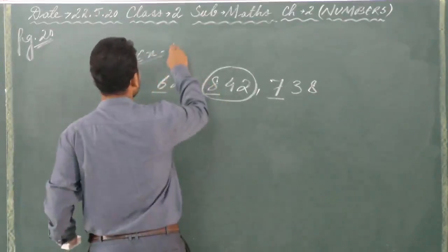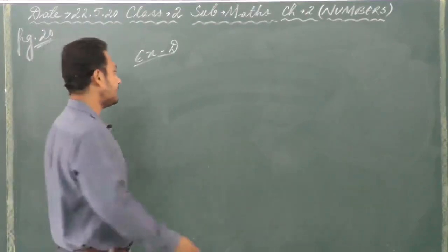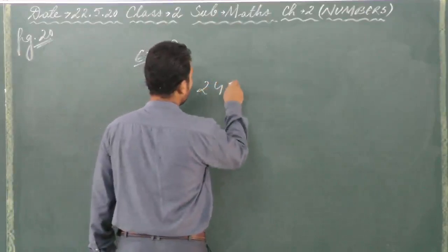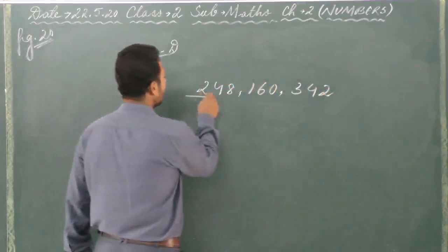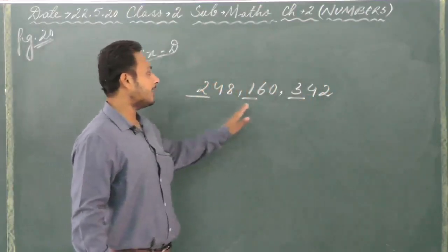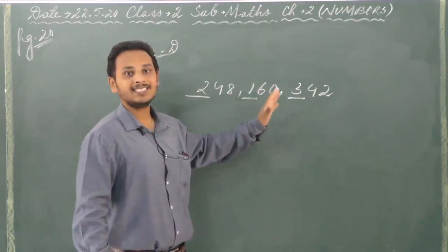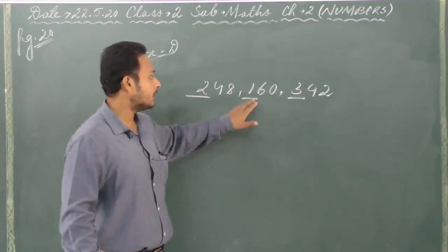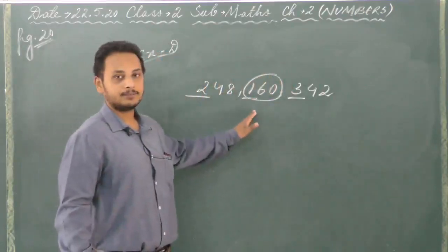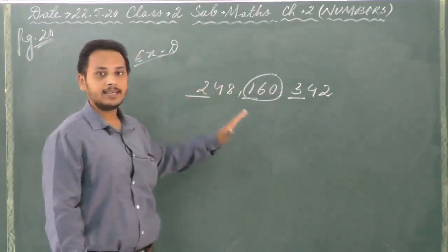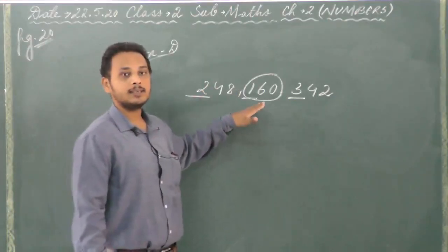Next we have Exercise D. Over there you have to circle the smallest number — the opposite. Suppose some numbers are here: 248, 160, and 342. You will take a look at the numbers in the hundreds place. We have 2, 1, and 3. Out of these three numbers, which is the smallest? It is 1. So 160 is the smallest number — you have to circle that. On page number 20, Exercise C and D, you will do it yourself. In Exercise C, circle the greatest number, and in Exercise D, circle the smallest number.